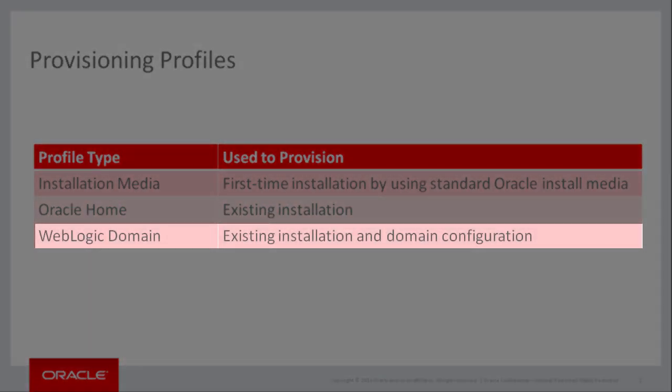The third and final type is a WebLogic domain provisioning profile. This type of profile is captured from an existing domain which has already been patched, configured, and discovered as a managed target in Enterprise Manager. This type of provisioning profile is used to both install WebLogic Server software and configure a new WebLogic domain.